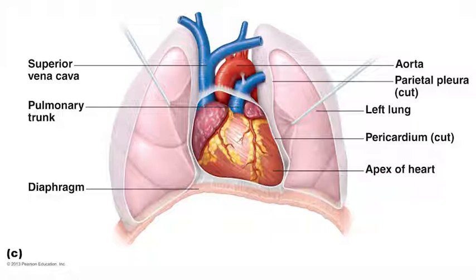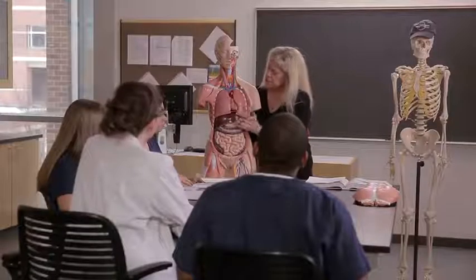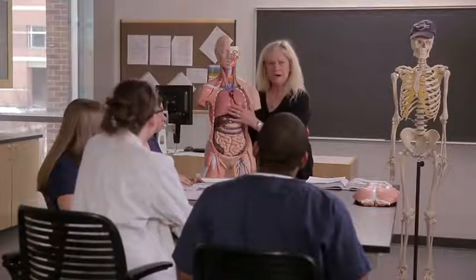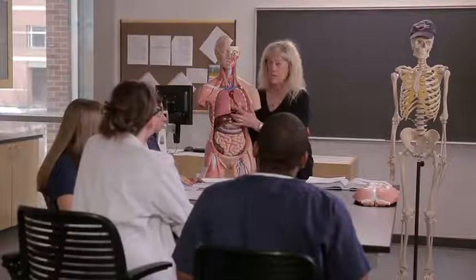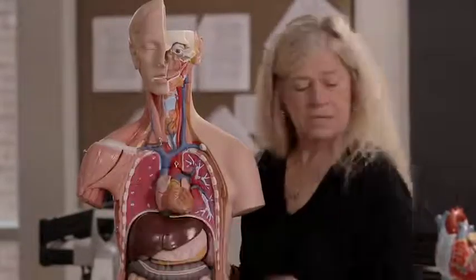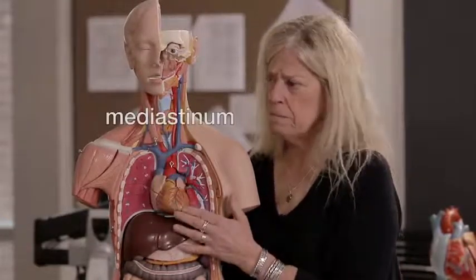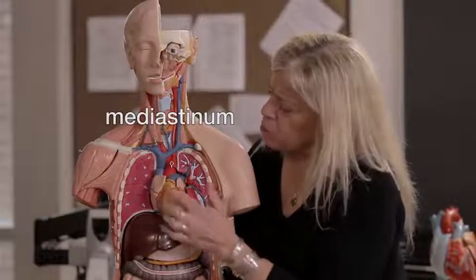It's very common in the body to have internal organs surrounded by membranes, which help to anchor the organs in position and protect them. The specific membrane layers that surround and protect the heart are called the pericardium. The pericardium is not present on our model, but if we remove the lungs we get a better picture of the heart's location in the mediastinum.